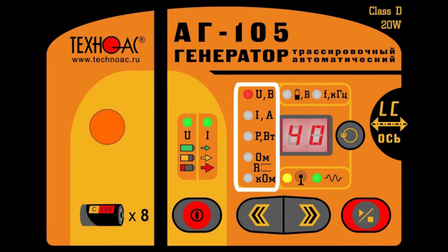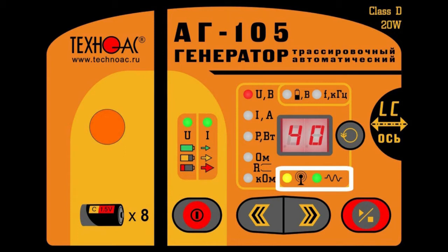Indicators of output parameters are shown in red color only in transmission mode. The indication of modes area shows: antenna mode if enabled, modulation activation, and type of generated signal.